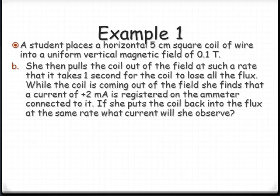Part B. Now she pulls the coil out of the field at such a rate that it takes about one second for the coil to lose all of the magnetic field, or all the flux. The flux goes to 0 within one second. As she does that, she finds that the current of positive 2 mA is registered on the ammeter. If she puts the coil back into the flux at the same rate, what current is she going to observe? If the rate change is the same, but the change in flux is the opposite, she will observe the same magnitude. Change in time hasn't changed, so it will be change in flux over time. So the magnitude, it will be 2, but it's the opposite process happening, so it's going to be negative 2 mA.